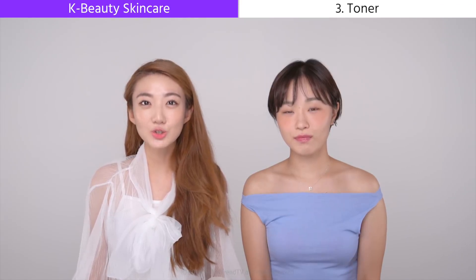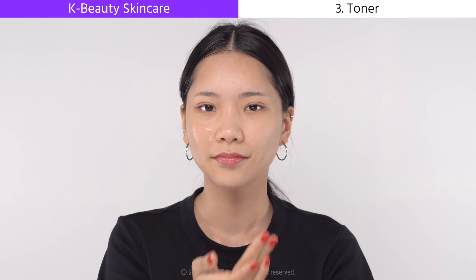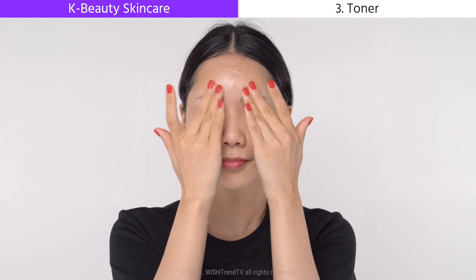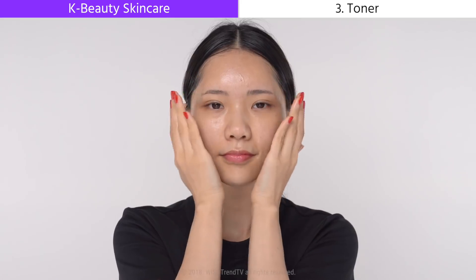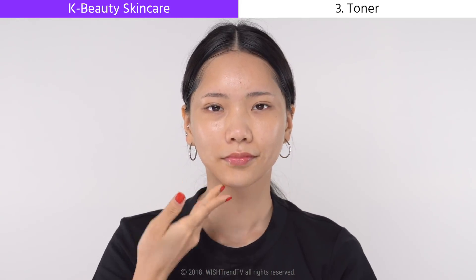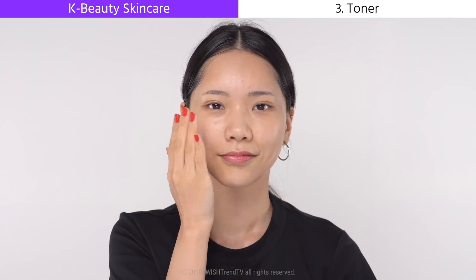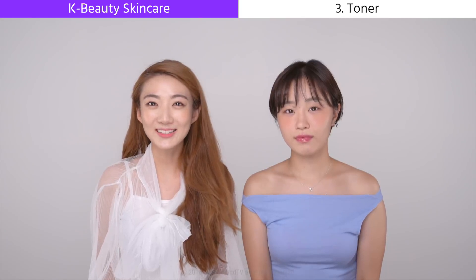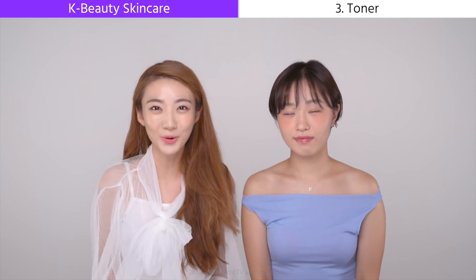Number three: toner. In any K-beauty routine, toner is a must — in Korea we call it 'skin.' Toner helps better prep your skin so it can absorb the products applied afterwards. If you're a huge fan of K-beauty, you already know about the seven-skin skincare step, which means applying a lightweight refreshing toner seven times — seven layers. Honestly, that trend has kind of passed because we just don't have time to apply seven layers every single night. But Koreans still use multiple layers — maybe two, three, or four.